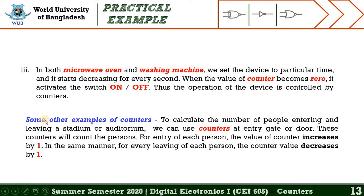Another practical example is calculating the number of people entering and leaving a stadium or auditorium. Counters at the entry gate count persons: for each person entering, the counter value increases by one, and for each person leaving, the counter value decreases by one.